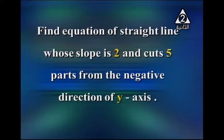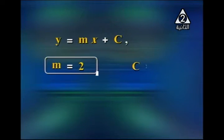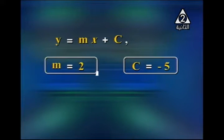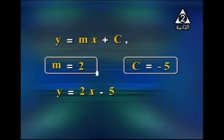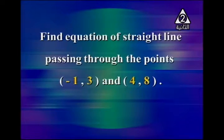Another example: find the equation of the straight line whose slope is 2 and cuts 5 units from the negative direction of the y-axis. Since it cuts from the negative direction, c = −5. By substituting into y = mx + c with m = 2 and c = −5, the equation is y = 2x − 5.